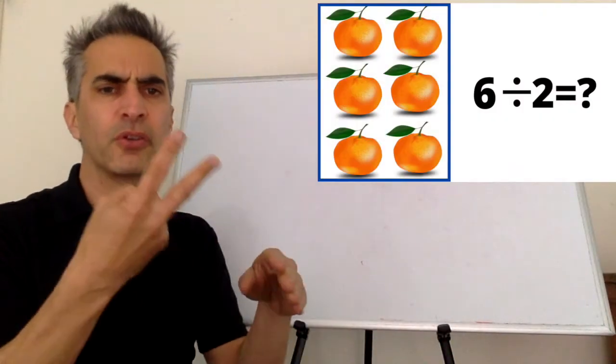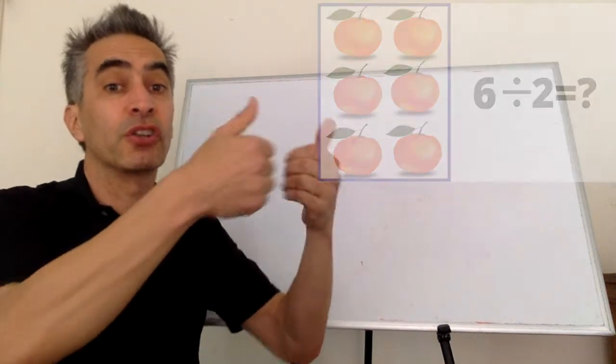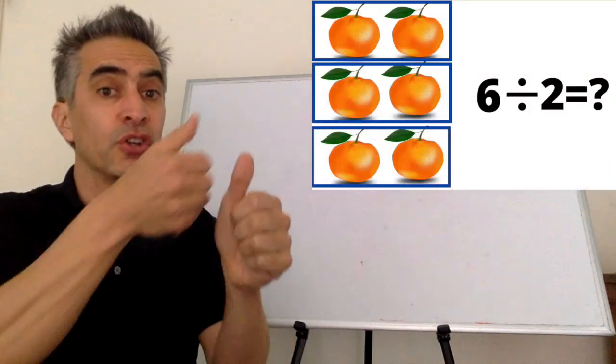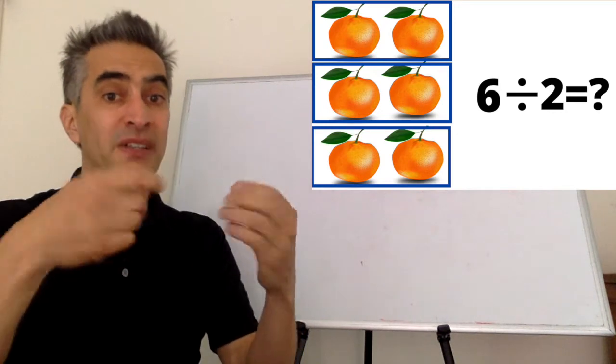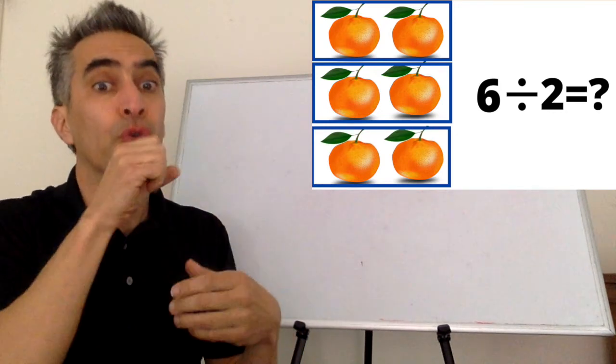What does this divided by two mean? It means you have to separate the oranges into groups, and each group has to have two oranges.